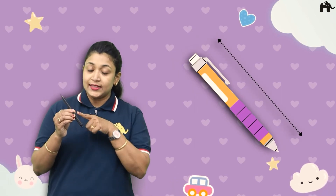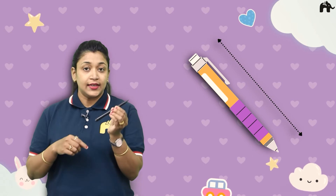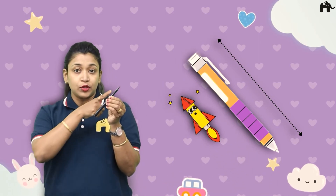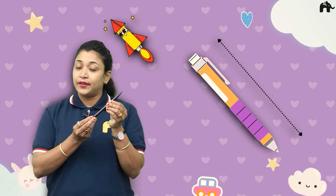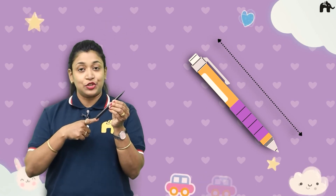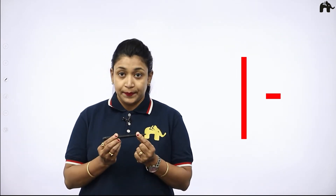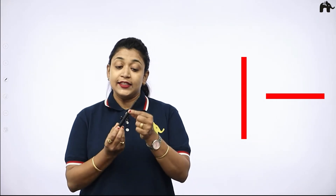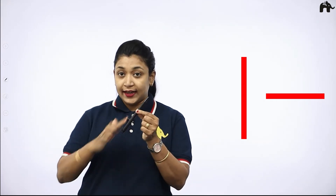Is this slanting line? Yes! See again — this is in slanting position. So this is our slanting line. So let's draw slanting line. Now we did standing line, then we did sleeping line, and now we will make slanting line.